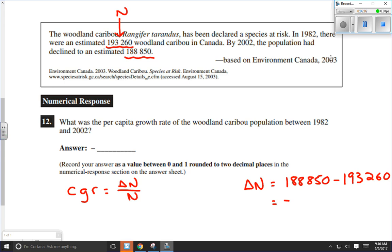I'll just get out my calculator because I'm too lazy to do this in my head. 188,850 minus 193,260. I get an answer of negative 4,410 caribou. That's how much the population is declining. That's our delta N. So I can go ahead and put that into my formula here. Negative 4,410 caribou.